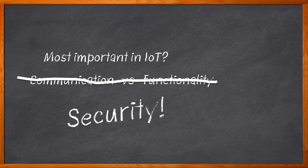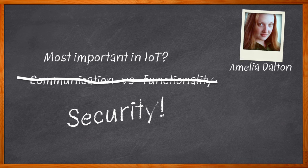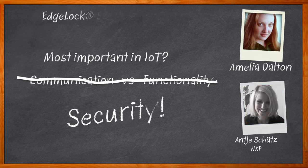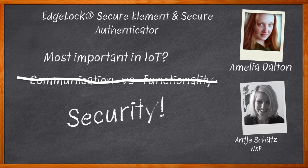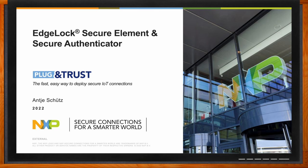Implementing a robust security solution for an IoT design can be a tricky process — until now. Hi, I'm Amelia Dalton, host of Chalk Talk. IoT designs today demand comprehensive security implementation, but incorporating a robust security solution in your design can be a complicated and time-consuming process. In this episode of Chalk Talk, Anja Schutz from NXP and I explore NXP's EdgeLock Secure Element and Secure Authenticator solution, examining how this flexible, future-proof, and easy-to-deploy solution can be a great fit for a variety of IoT designs. Don't forget to click that link for even more information about this topic from NXP.